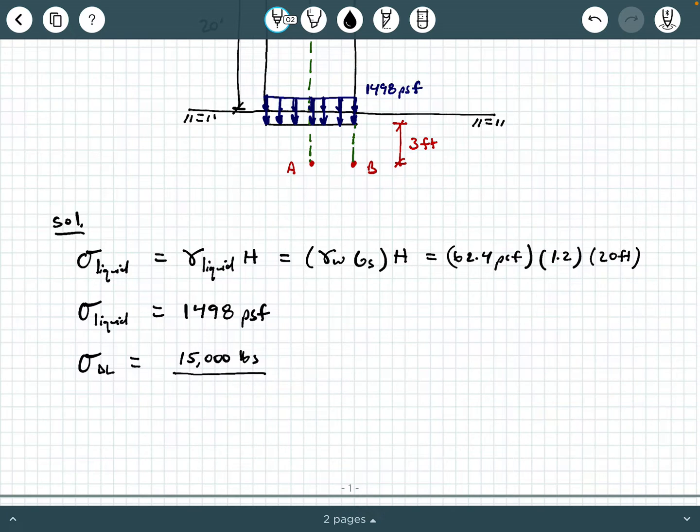So we're gonna spread that over the area of the tank, which is just gonna be π times the radius of the tank squared. That's literally just force divided by area. Force over area is stress. So we can punch this through, 15,000 divided by π times 5 squared is 191 PSF.